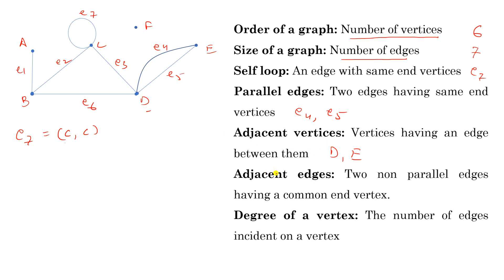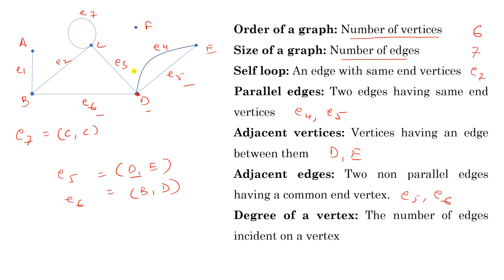Adjacent edges are two non-parallel edges having a common end vertex. For example, E5 can be written as (D, E) and E6 as (B, D) — vertex D is common, so E6 is adjacent to E5. Similarly, E5 is adjacent to E4, E1 is adjacent to E2, and E1 is adjacent to E6.